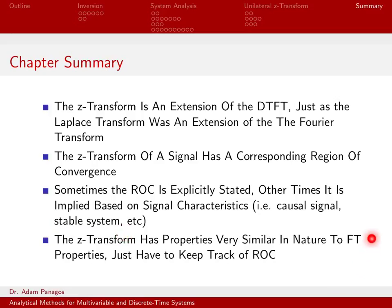The properties of the Z-transform are all very similar to properties of the Fourier transform. The only real difference is that as you use the properties, you also have to keep track of the region of convergence. Often the region of convergence changes — sometimes it turns into the intersection of two different sets of the complex plane, sometimes it rotates or shrinks. But you have to keep track of that region of convergence as you apply your different Z-transform properties.